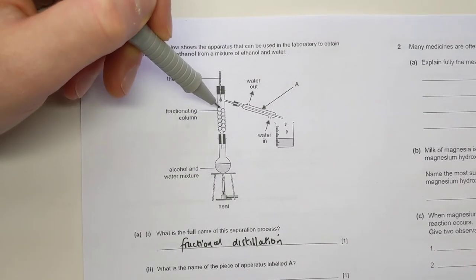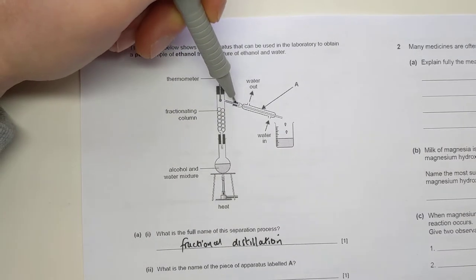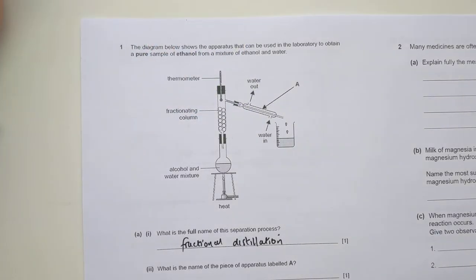Once they get to the top of this column, they can go out the top. The thermometer is there with it. It has to go down through this piece of apparatus, which is cold water running through it, which condenses it and turns it back into a liquid.